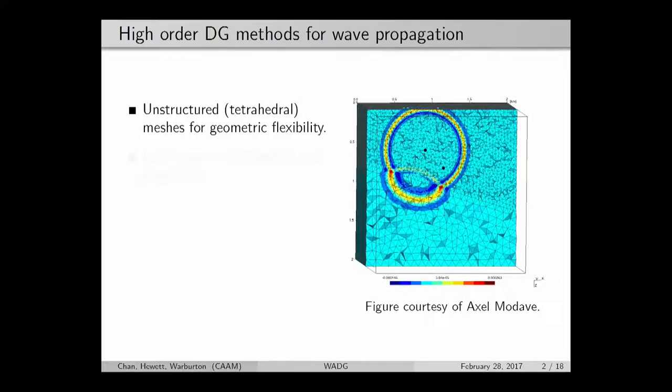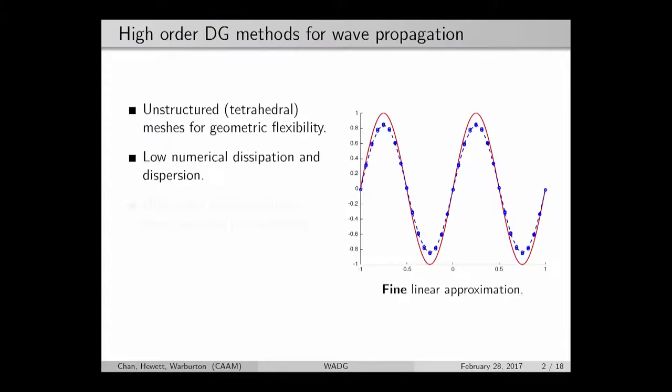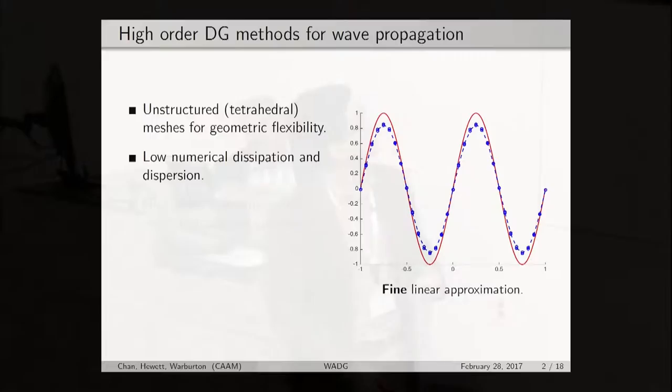If you know some geological feature like this interface or geometry, you can mesh very closely to these features using unstructured tetrahedral meshes. This gives us geometric flexibility, but we're also interested in the high order aspect of DG methods. You can go arbitrarily high order accurate in space with DG.